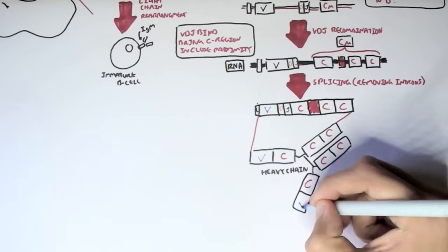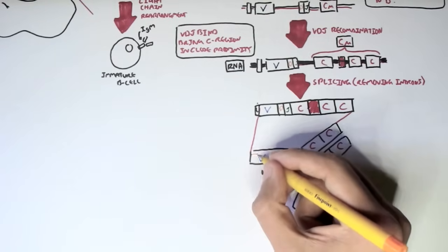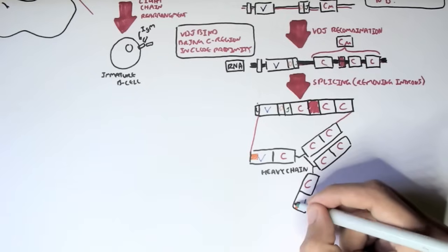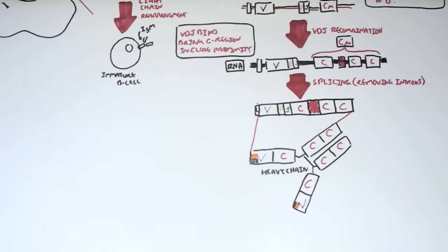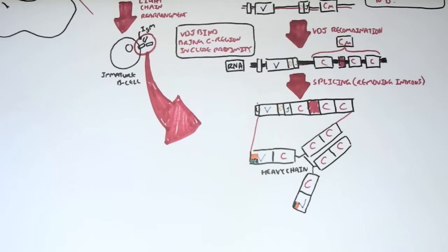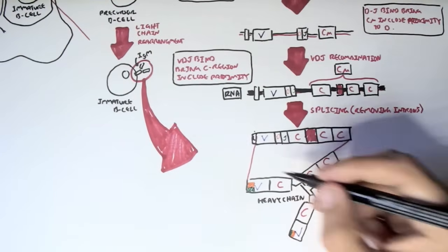Unfortunately, the D and J regions I'm drawing here in orange and green are drawn incorrectly. They're supposed to be on the other side, on the opposite side, but that's just a minor error. Anyway, this antibody is essentially this IgM antibody we find in this immature B cell.